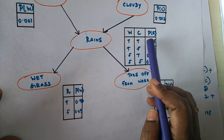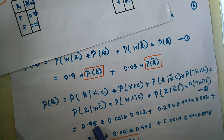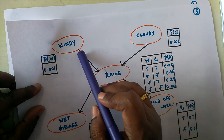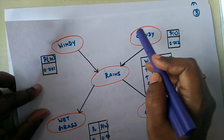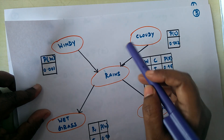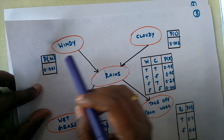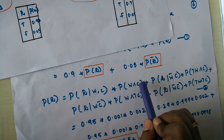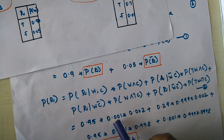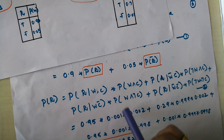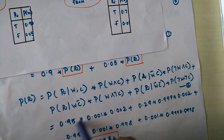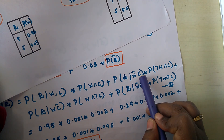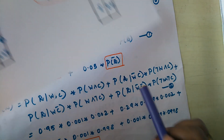When it is windy and cloudy, the probability of rain is 0.95. The joint probability of windy and cloudy can be easily determined since they are not dependent on any other random variable — the joint probability is simply the product of their individual probabilities: 0.01 multiplied by 0.002. For the second factor: when it is not windy and cloudy, what is the probability of rain?